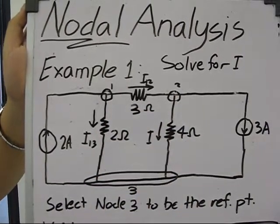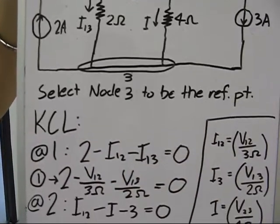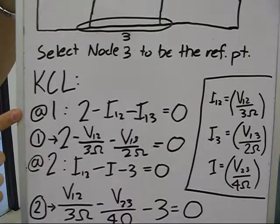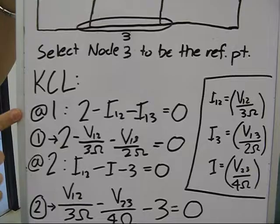Suppose we select node three to be the reference point. Applying KCL at node one, we have two amperes minus I sub one two, minus I sub one three, equals zero.